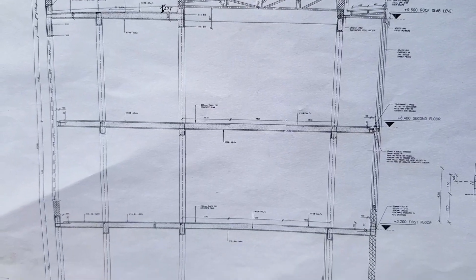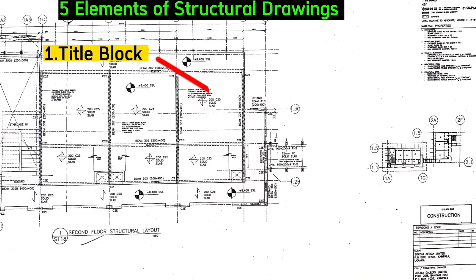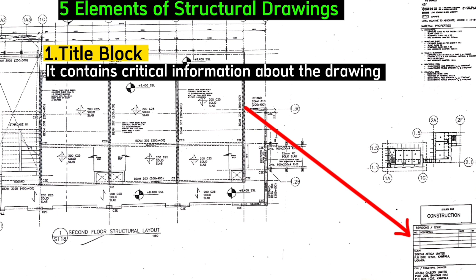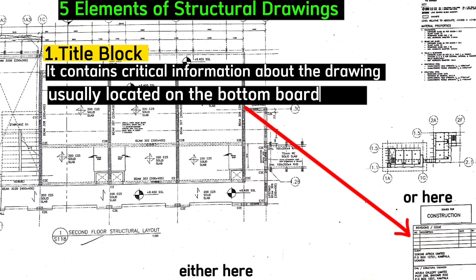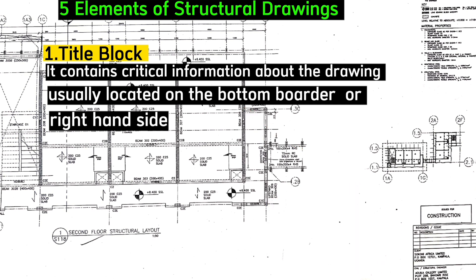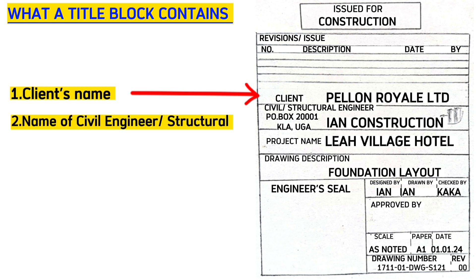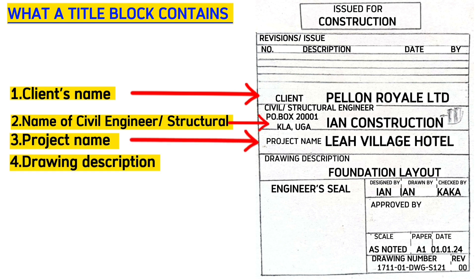When a structural drawing is handed over to you, first have a look at these five elements. The first element is the title block. The title block contains critical information about the drawing, usually located on the bottom border or the right-hand side. Ours here is located on the right-hand side and includes the client's name — here our client is Pellon Royal Limited — the name of the civil/structural engineer or group of engineers as Ian Construction, the project name as Liar Village Hotel, and the drawing description, which differs per page.